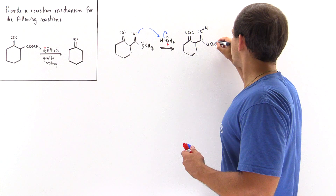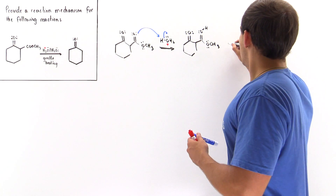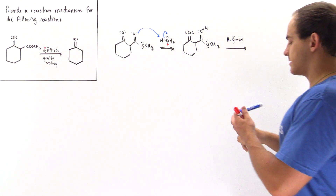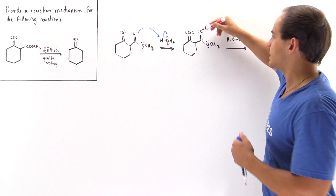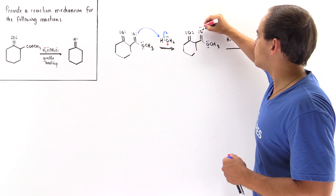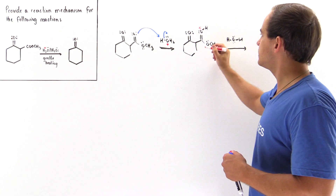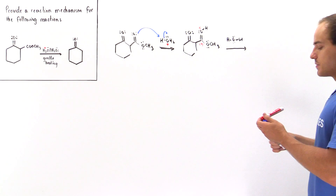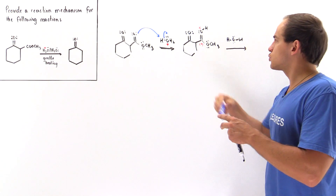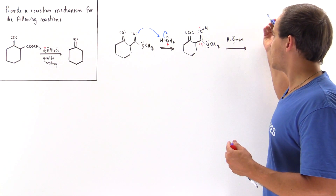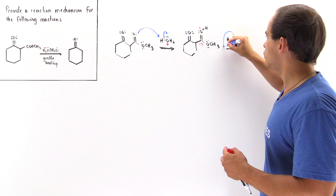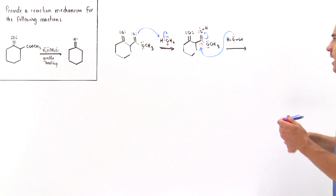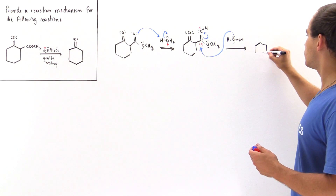We have the methoxy group as well, and we have the water molecule that we're going to need to use in the next step. In this intermediate, this is a strong Lewis acid. We have a positive charge that is delocalized among this oxygen as well as among this carbon - we have a resonance-stabilized structure. Because this is a strong Lewis acid, the water can act as a Lewis base, so it acts as a nucleophile, attacking this carbon, displacing the pi bond, and placing it onto this oxygen.